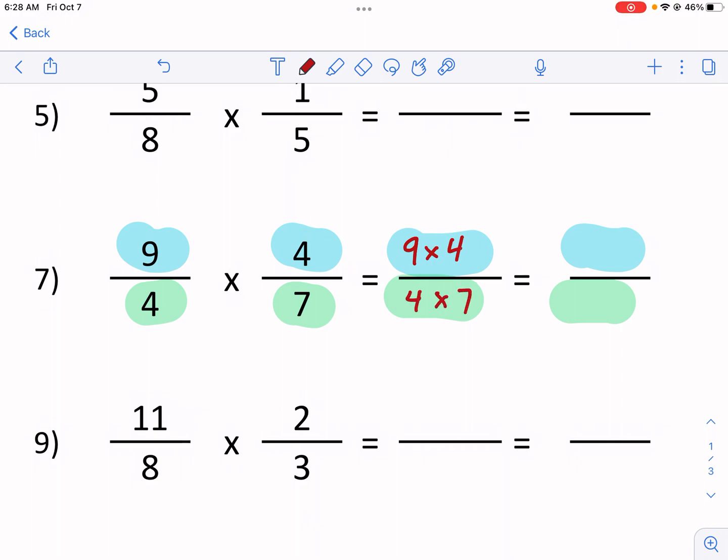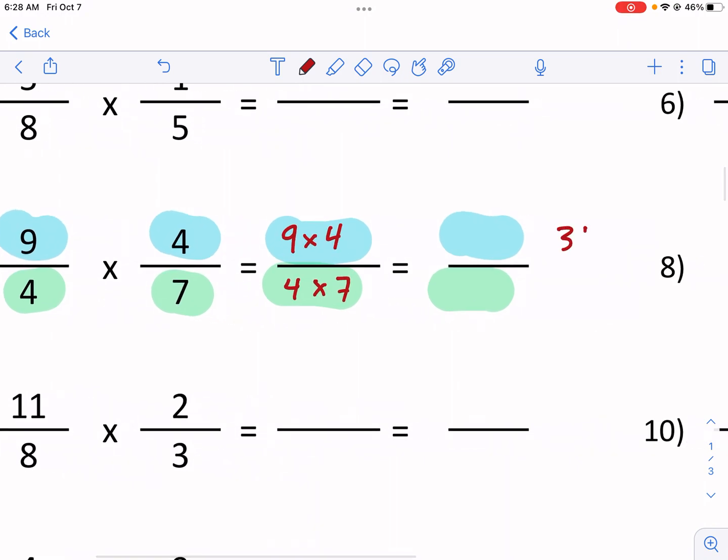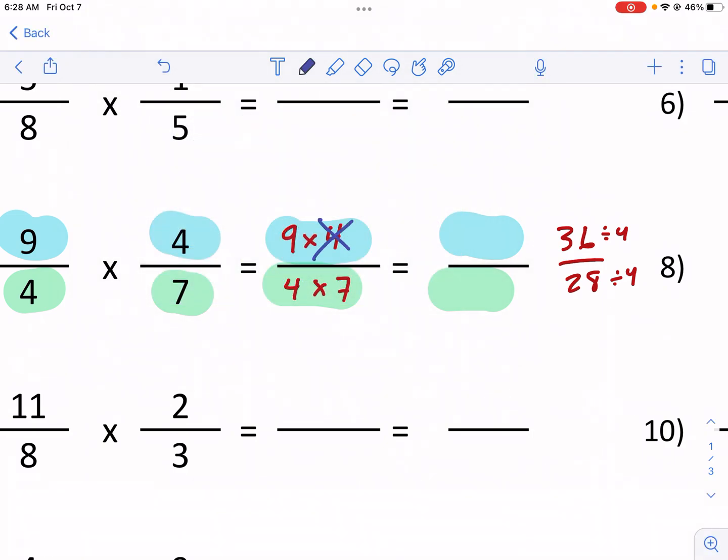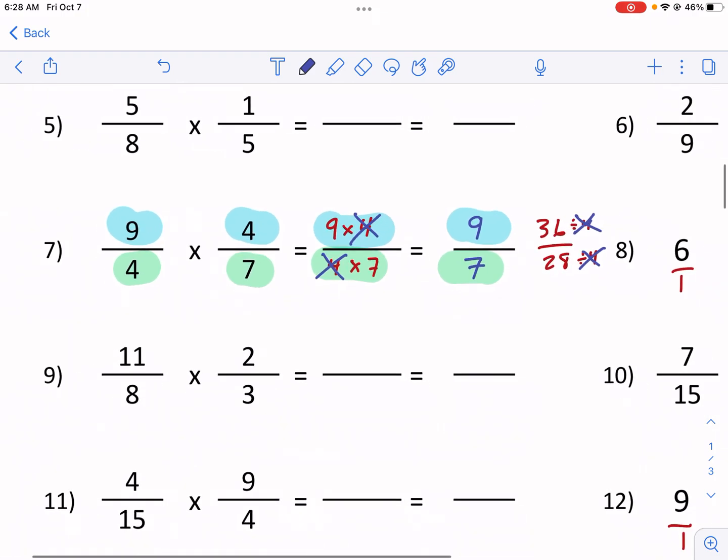We have four times seven. Now you could go 36 over 28, but then they have common factors. They both have a common factor of four. You divide this by four, divide this by four. Or you could recognize that if you have a four in the top and the bottom, you can cross them out because that's essentially what you're doing with that divide by four. So we're going to end up with nine over seven. That's going to be the simpler way to do it.